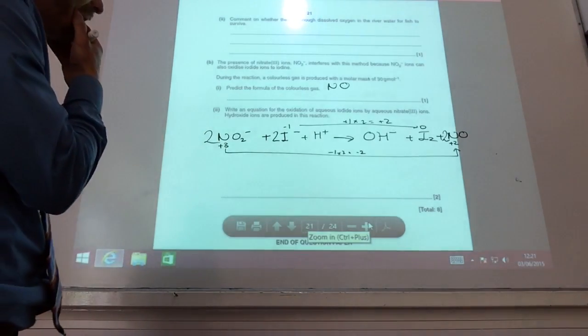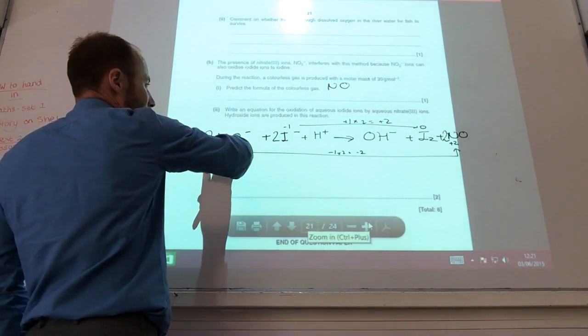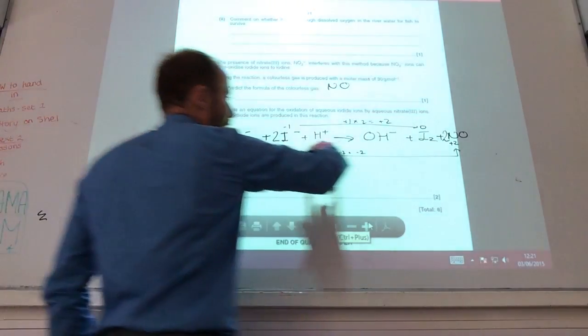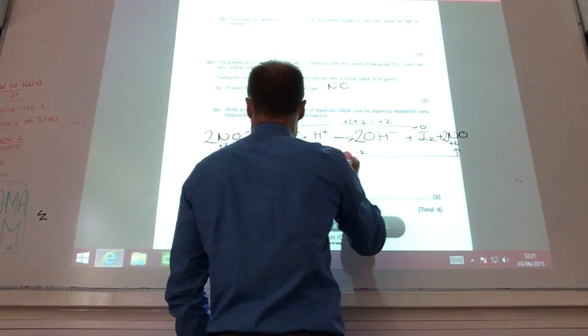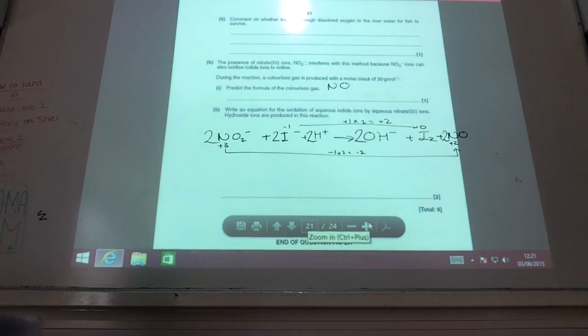Let's have a look in terms of oxygens. I've got 4 there, I've got 3 there. So if I put 2 there, that means I need 2 H pluses there.